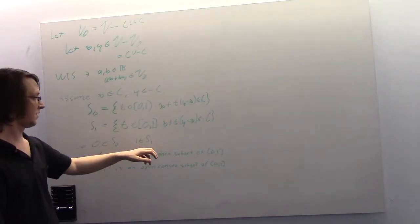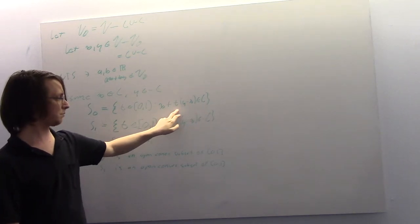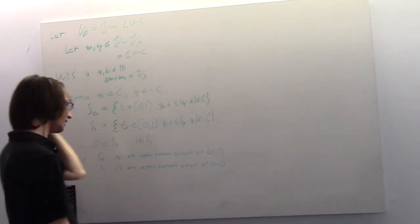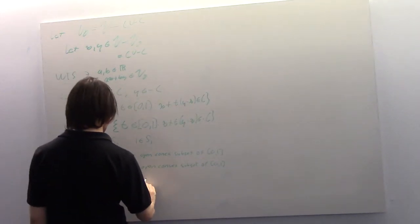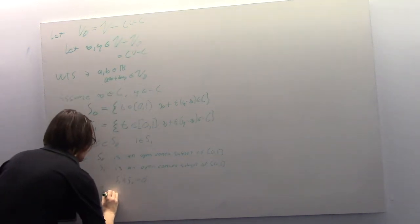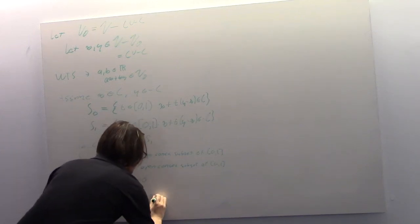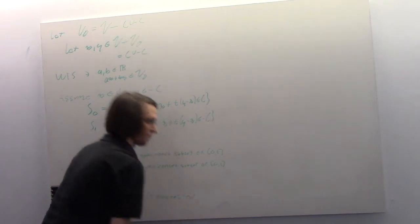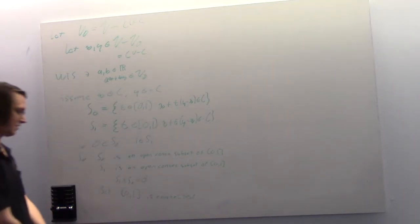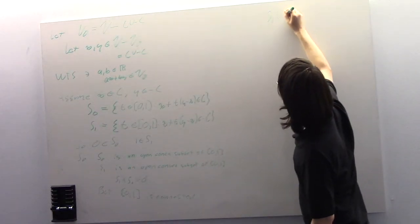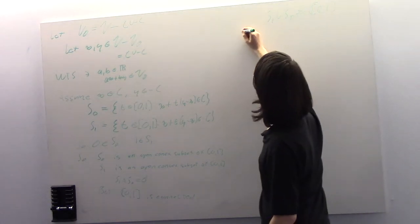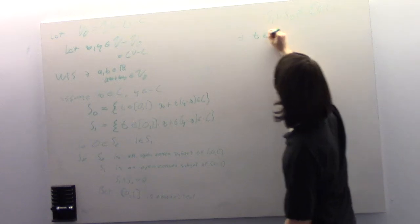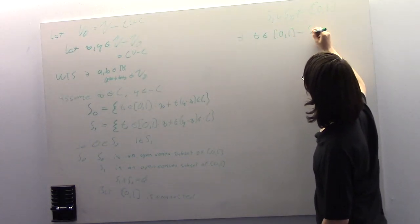We know minus C and C are disjoint, so if X plus T(Y minus X) is in C then it's not in minus C. Therefore S1 intersected S-naught equals the empty set. But [0,1] is connected, which means S1 union S-naught does not equal [0,1]. So there exists a T in [0,1] minus (S1 union S-naught).